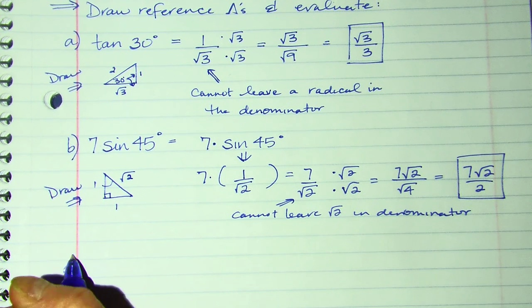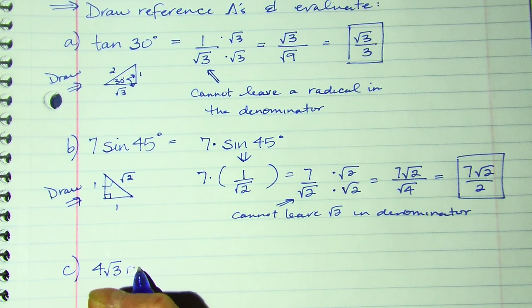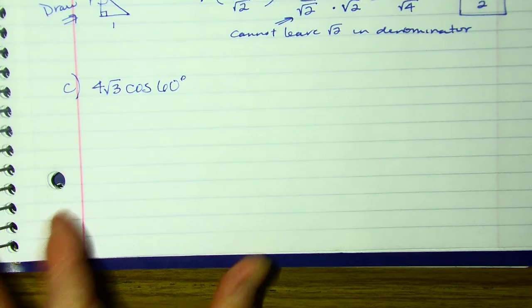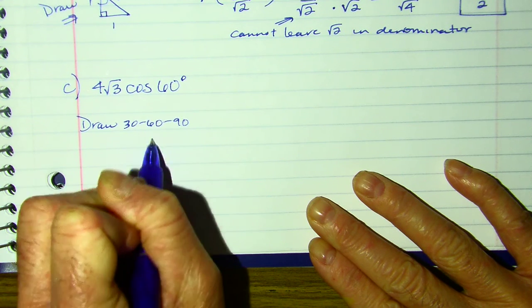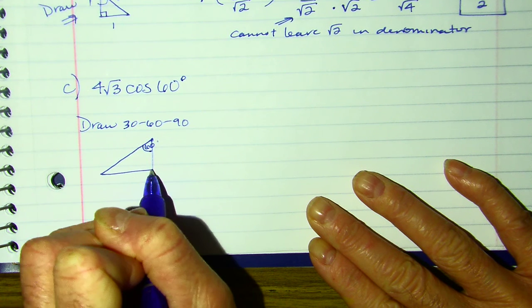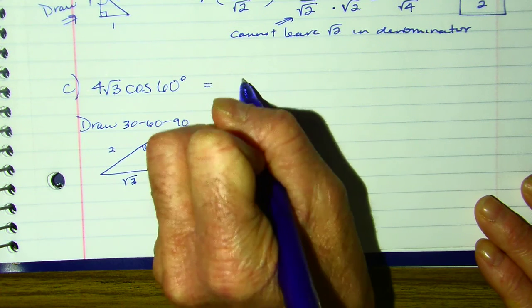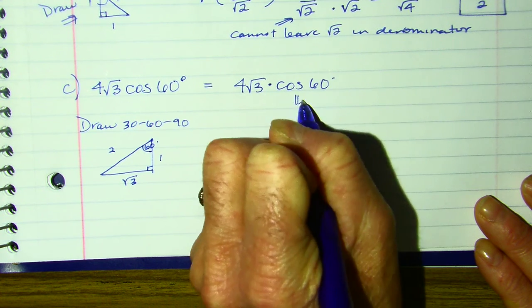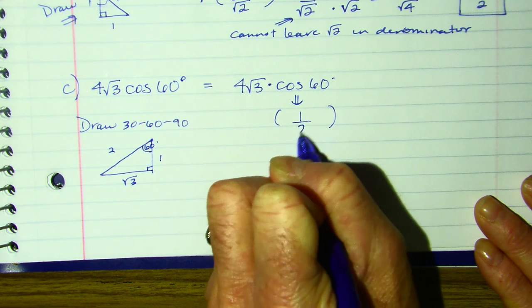Part C, we are going to evaluate 4 root 3 times the cosine of 60 degrees. So notice this one involves 60. So I'm going to draw my 30-60-90. So there's my 60 degree. Here's my right angle. So I've got 1, 2, root 3. Okay, so this is really 4 root 3 times the cosine of 60.